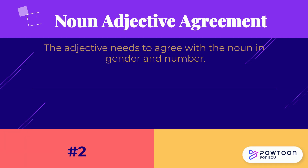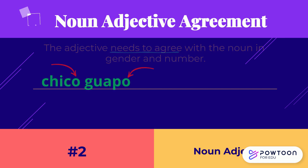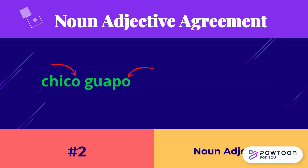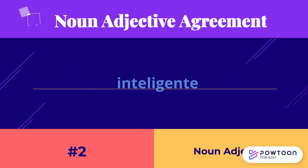This is because you have an adjective — a descriptive word — that does not agree with the noun in gender or number. If the adjective ends in an O or an A, the noun should also end in an O or an A. Adjectives that end in an E are neutral and only change by adding an S to make them plural.